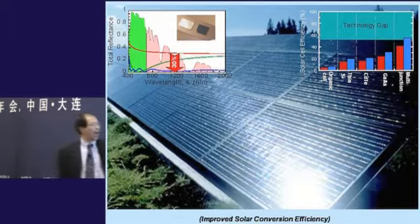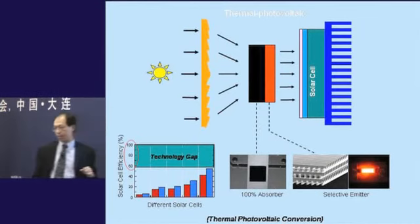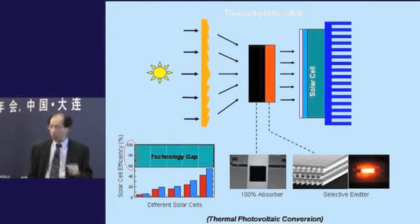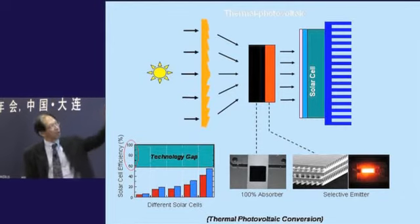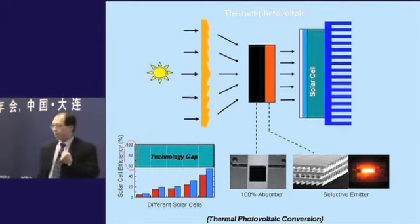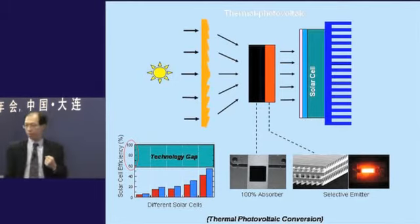However, what happens to the other 50%? Even if you have 50%, those become heat. We must deal with heat from the fundamental aspects. The key aspect is to have a thermal base photovoltaic generator. And the key issue is how to generate the dark material to maximize absorption.